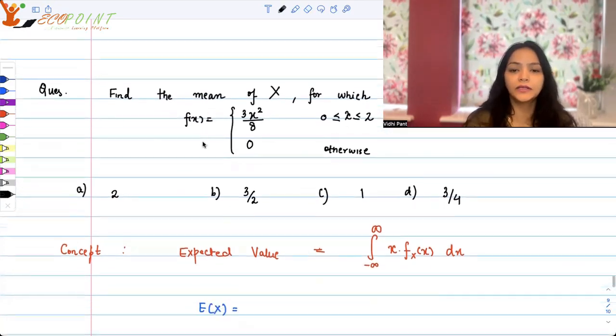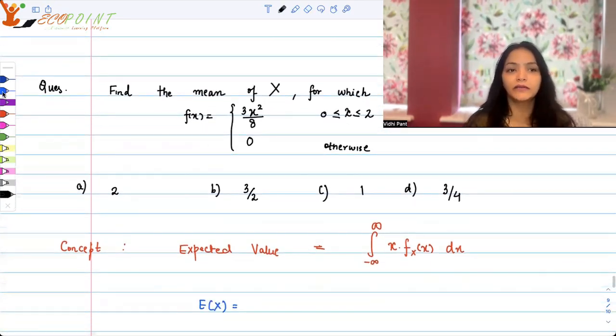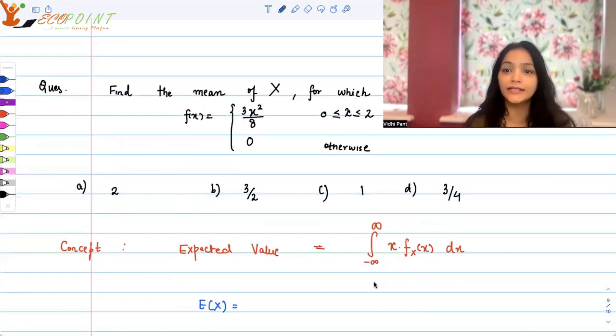Now mean is supposed to be expected value. Expected value is the weighted average of a random variable where the weight attached to the random variable is the probability associated to it. So it is minus infinity to infinity, the entire domain, x times f(x). f(x) is the pdf.